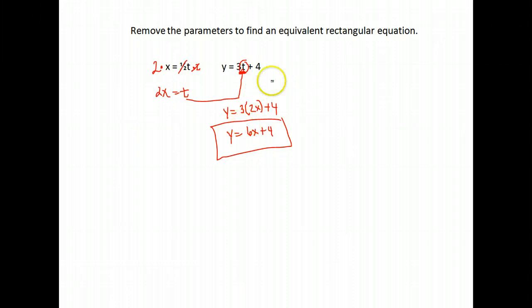Now, sometimes they'll give you a parametric equation and give you values for t, like a range. So let's say they wanted you to graph for t between 1 and 8. When you change this, and if you want to keep those restrictions, all you have to do is take what you solved t for, which was equal to 2x, and replace that.